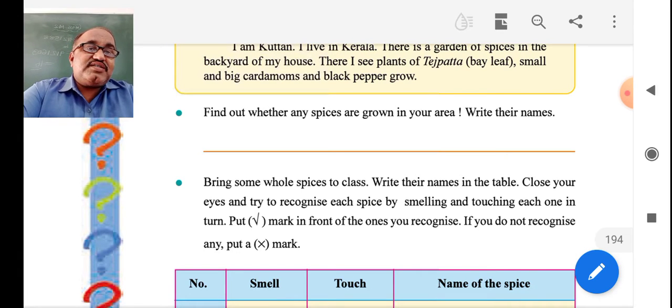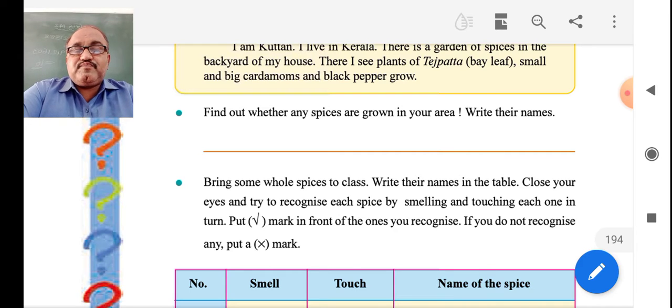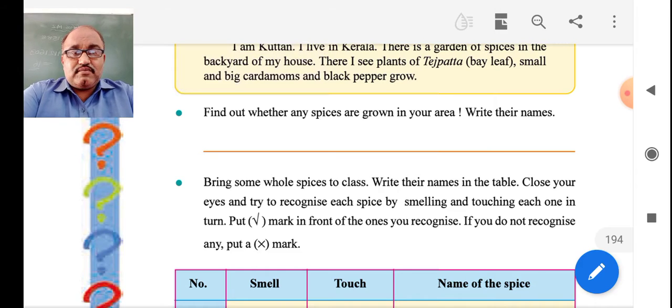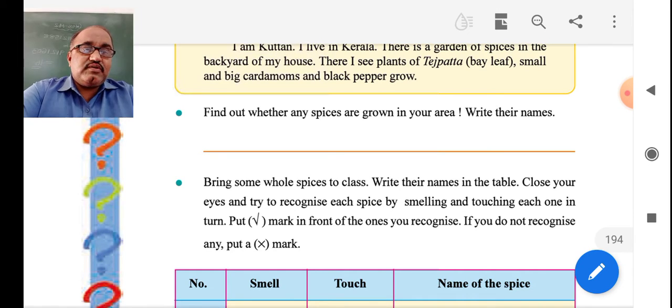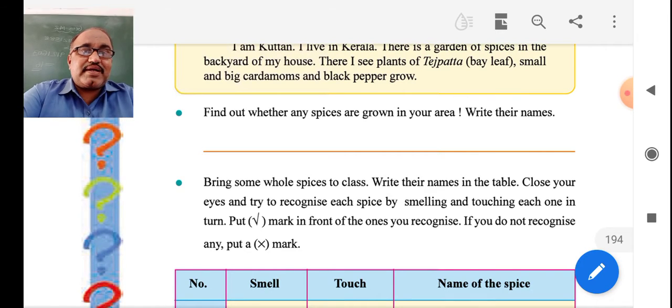Find out whether any spices are grown in your area and write their names. Dear students, usually we grow onion, groundnut and all. Spices are prepared in other states. Even though we used to have turmeric crops alternately and farmers are selling into the market.